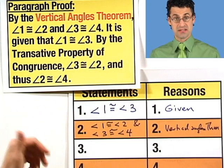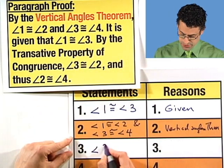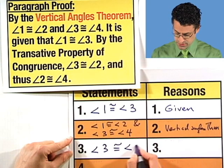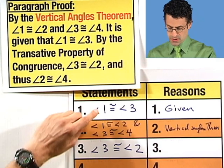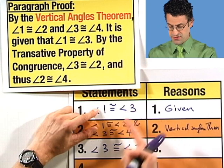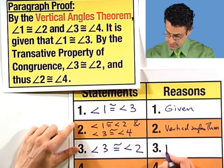And now what I want to do is use the transitive property to conclude that angle three must be congruent to angle two. Why is that? Well, I know that one is congruent to three, I know that one is congruent to two, so therefore these two must be congruent, and that's by the transitive property.